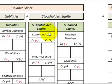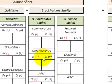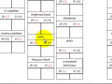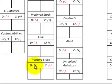In stockholders equity we have common stock and preferred stock in the contributed capital section, along with additional paid-in capital. Then we have treasury stock, which acts as a contra account — so debits increase and credits decrease, which is the opposite of your other contributed capital accounts.